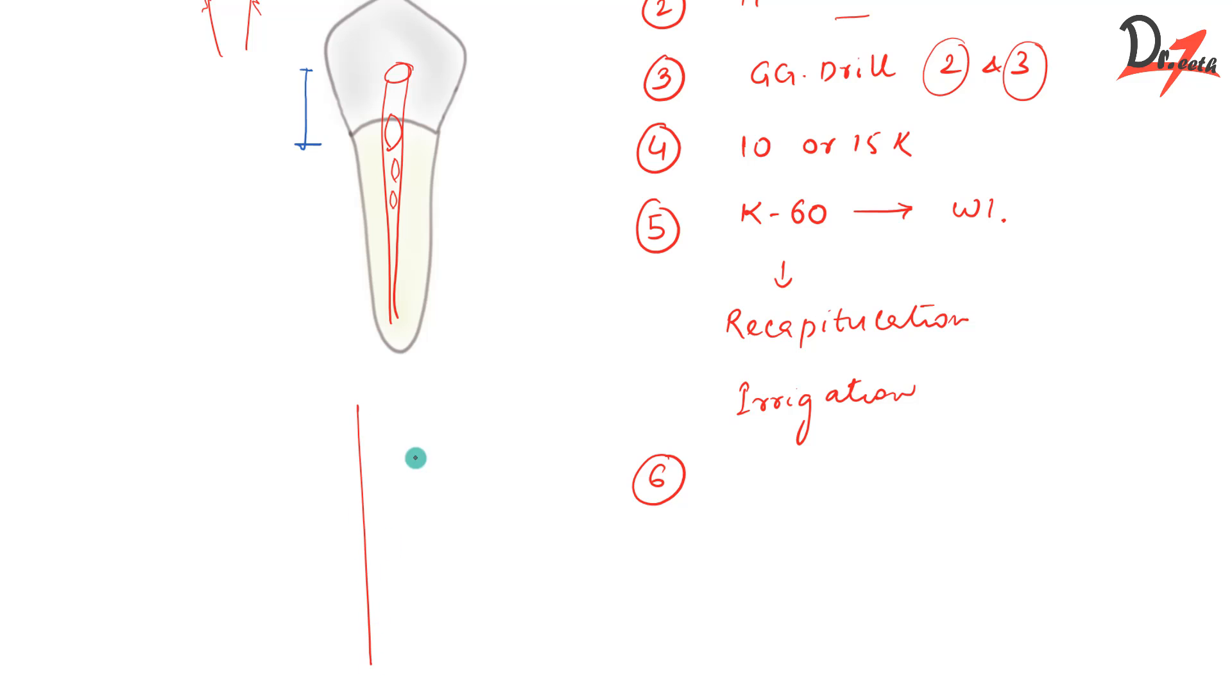Then finally you will get the proper taper in the master apical file using the circumferential filing. So we'll do circumferential filing and we'll get that proper taper. So this was the crown down technique.